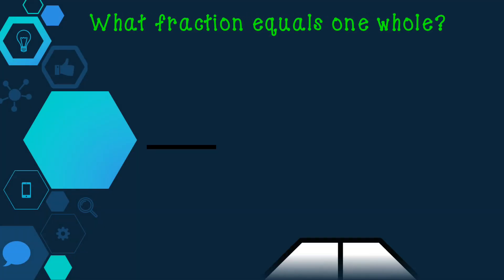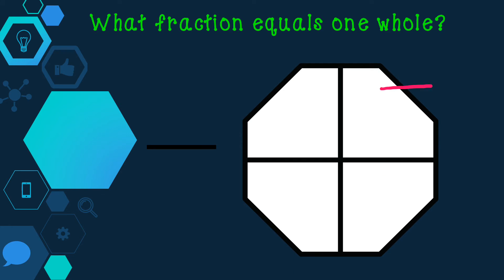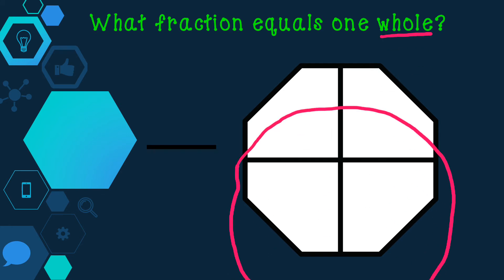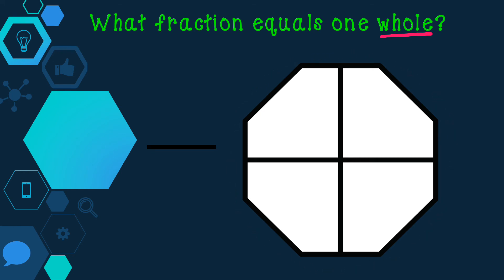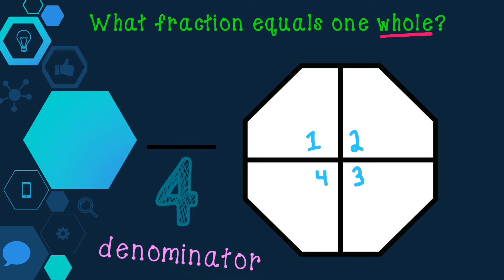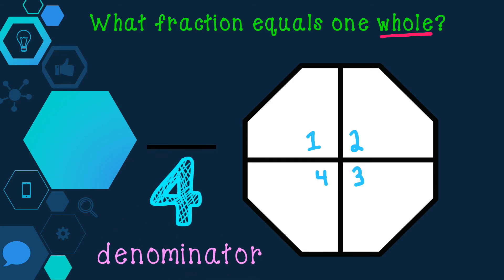What fraction equals 1 whole? Remember that whole means all or the entire figure. In this case, the entire figure is the octagon. To get the fraction that equals 1 whole, I will start by counting the number of equal parts: 1, 2, 3, 4 equal parts. So the number 4 goes in the denominator, because it represents the number of parts the shape has been partitioned or divided into.